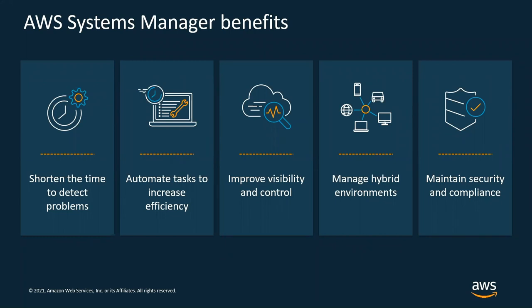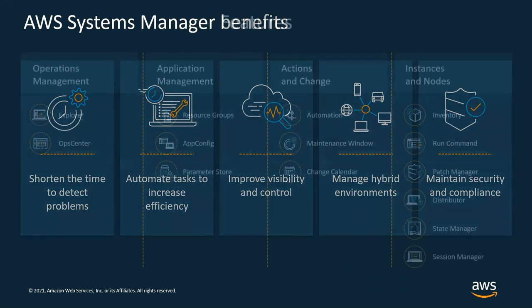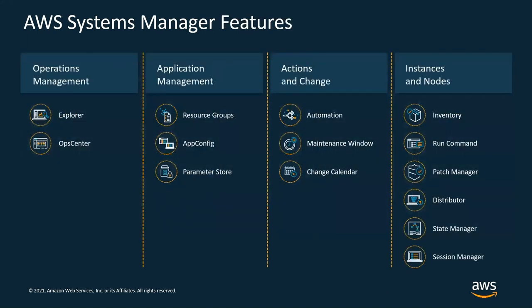Now that I've talked about the overall benefits of Systems Manager, we'll go through the high-level features it offers. Some of the features here are within Operations Management — Explorer and Ops Center. Application Management includes Resource Groups, App Config, and Parameter Store. Actions and Change covers Automation, Maintenance Windows, and Change Calendar. And then Instance and Nodes — we have Inventory, Run Command, Patch Manager, and Distributor, which we're talking about today. And then State Manager and Session Manager.